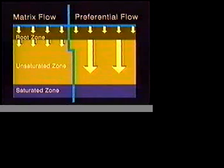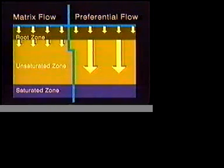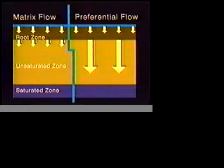Water often follows a less predictable path — a preferential path. The path water follows depends upon factors such as the soil texture, the structure of the soil, and the rate at which water infiltrates the soil. The term used to describe subsurface flow that is not uniform but is broken into narrow, concentrated paths is called preferential flow.